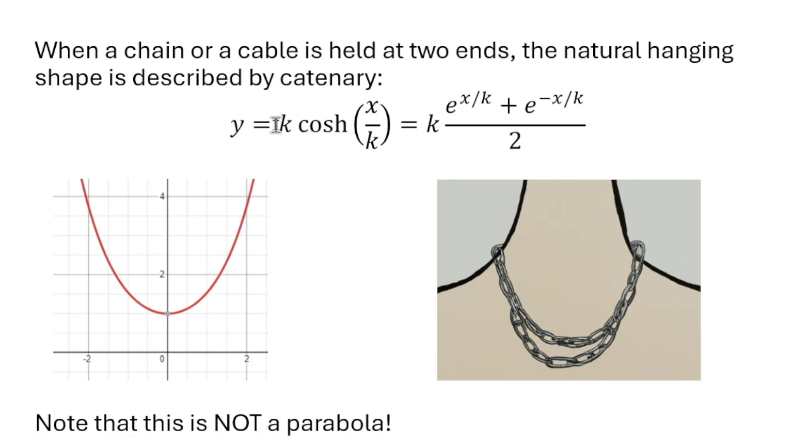Which is k times cosine hyperbolic x over k. Cosine hyperbolic is the symmetric part of the exponential function. It's e to the something plus e to the negative of that divided by 2, that's what cosine hyperbolic is.